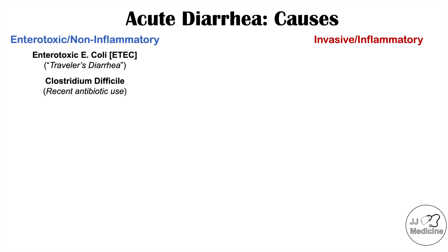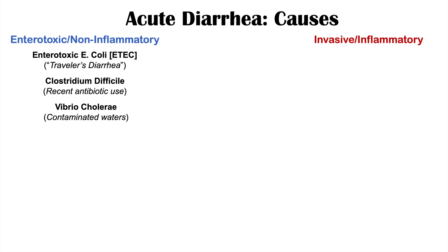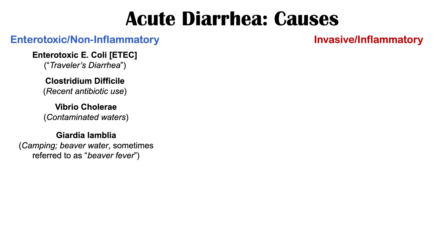When an individual takes an antibiotic like clindamycin, it kills a lot of the normal gut flora, leaving Clostridium difficile to flourish and causing enterotoxic acute diarrhea. We can also see Vibrio cholerae as a cause, found in contaminated water — often in impoverished areas — or in vegetables cleaned with contaminated water, or certain shellfish. Another cause is Giardia lamblia, a protozoal parasite seen in individuals who go camping and drink fresh water from nature, sometimes called beaver fever.